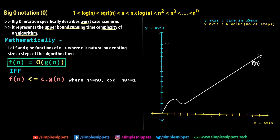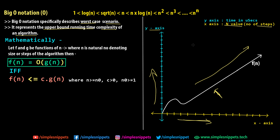On the graph, the x-axis represents n, the number of steps, and the y-axis represents time in microseconds. Whenever an algorithm runs, it takes some amount of time, and algorithm analysis is about finding how the algorithm behaves in terms of time given a certain input. For example, if it requires 10 steps and takes 10 seconds, what happens when we have 20 steps? This graph shows a linear time scenario — as n increases, the time also increases in a linear, straight-line way, known as linear time complexity.